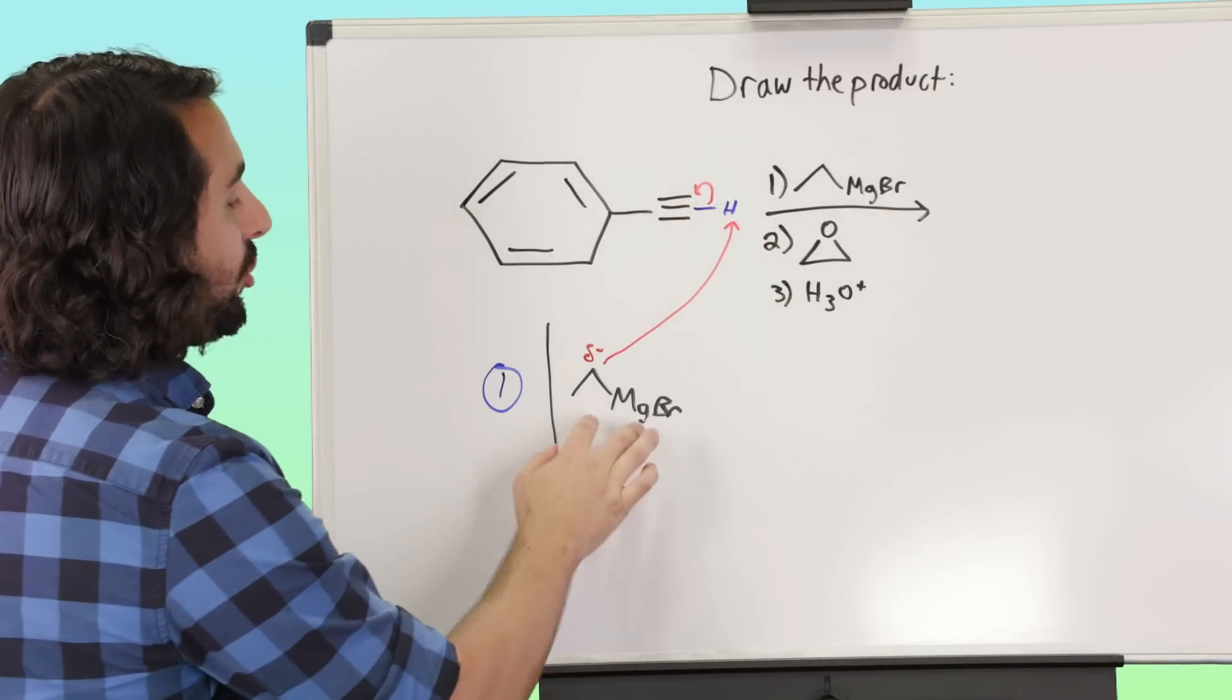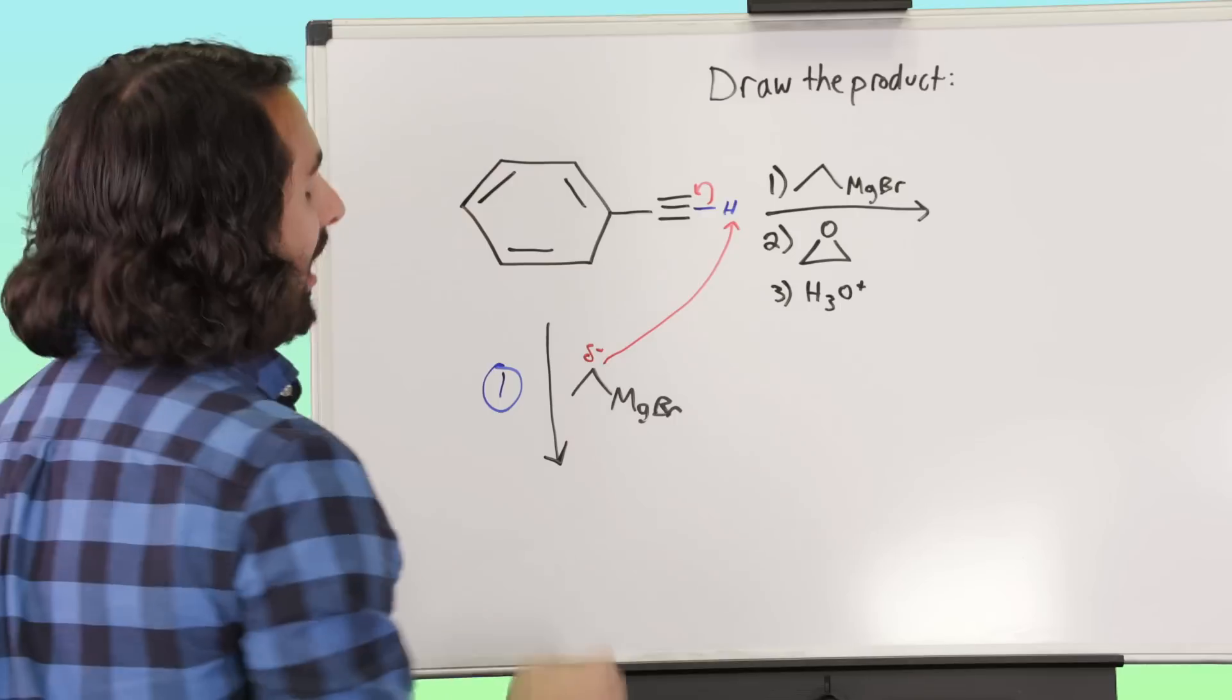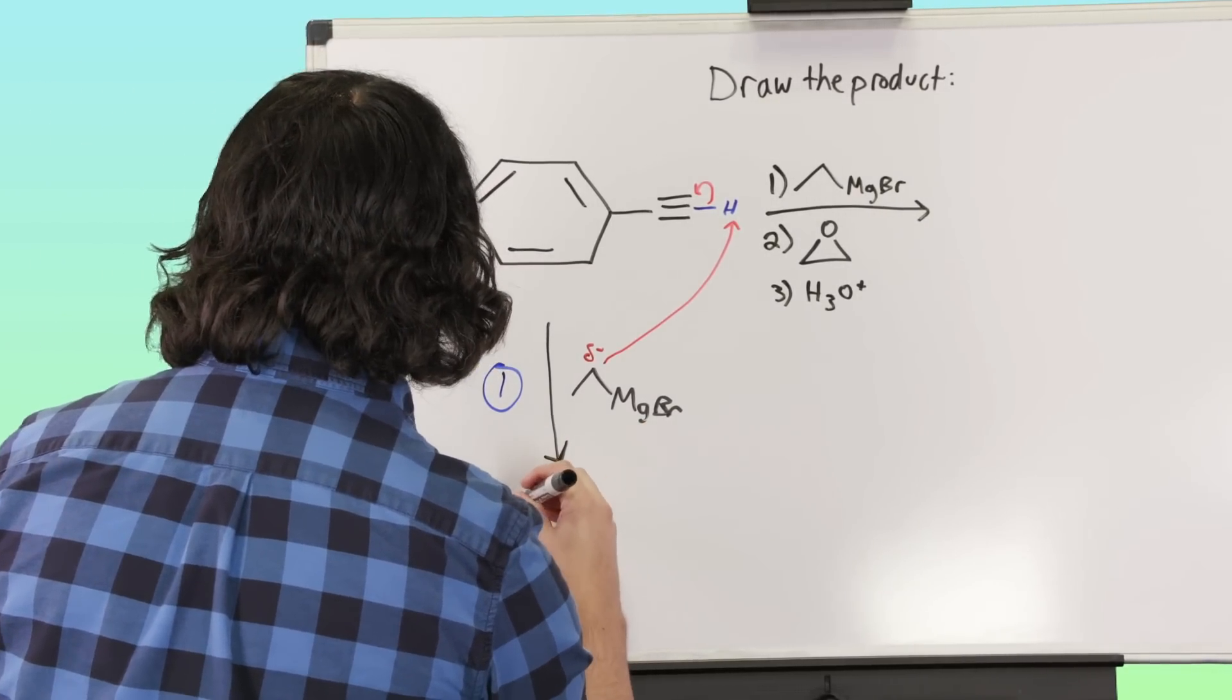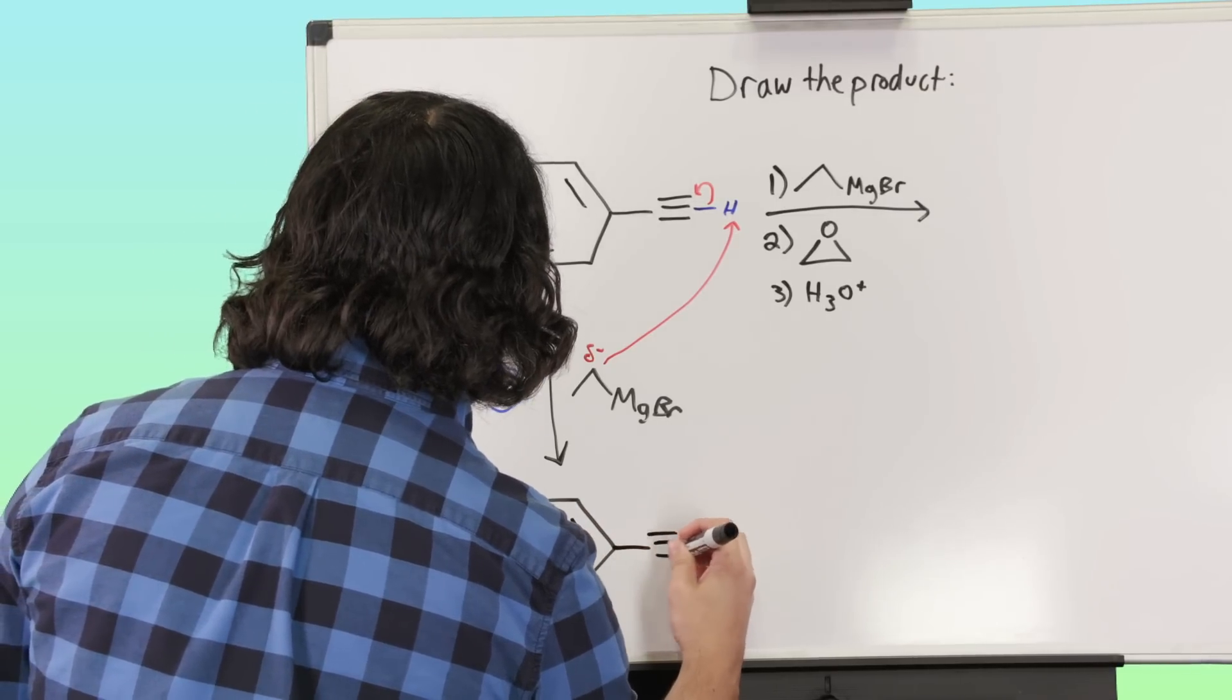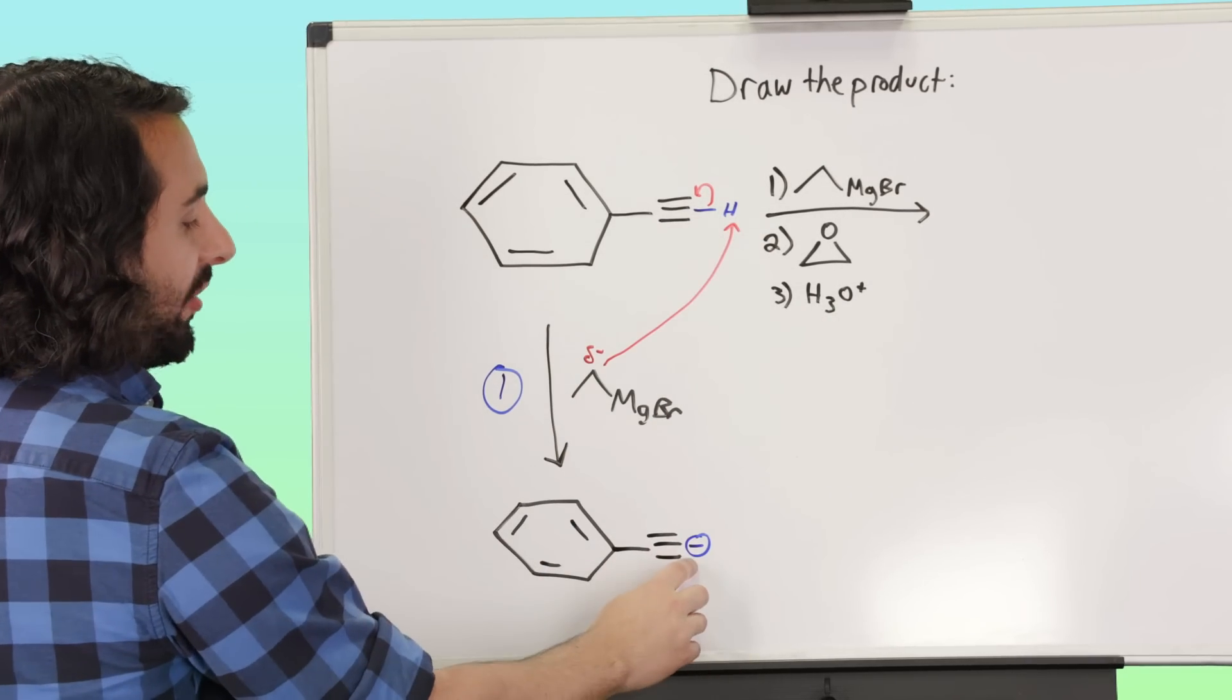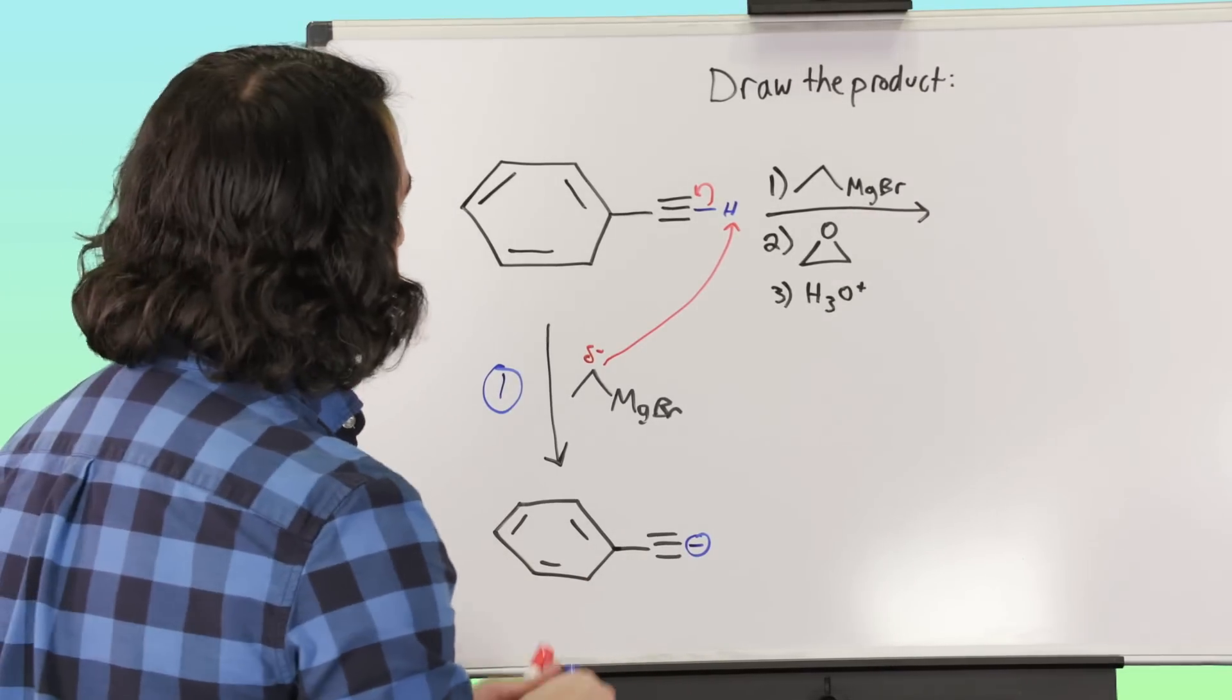We have to say, all right, there's a Grignard reagent, there's no carbonyl, what else can it do? I know it can do acid-base, and clearly the most acidic proton on there is that alkynal proton. So this is just a little bit of an unorthodox way of doing it, but we are going to prepare the acetylide anion. So this has lost that proton, we've got a formal negative charge on that sp carbon right there, and so that's the first one.